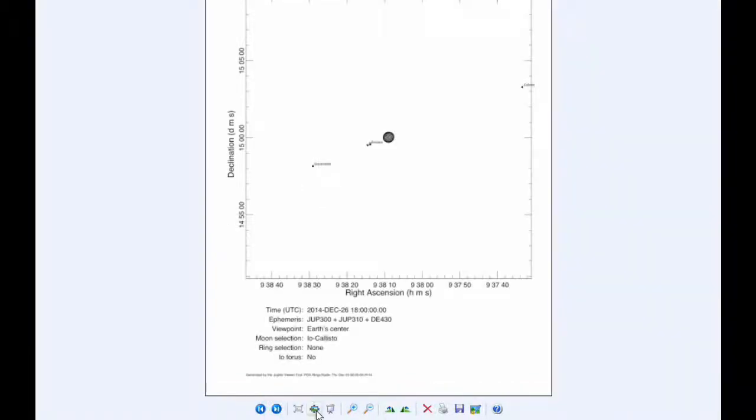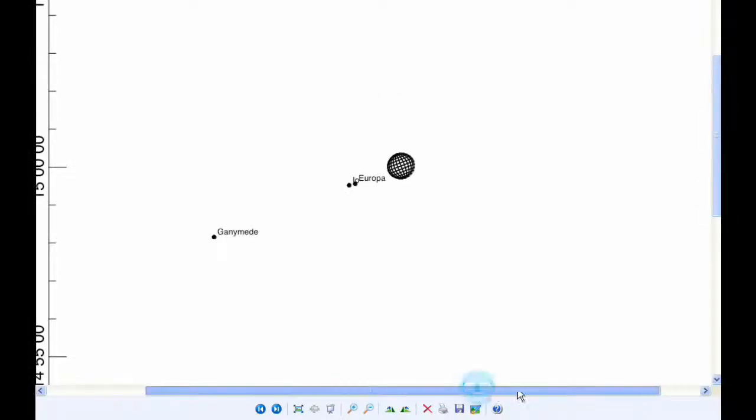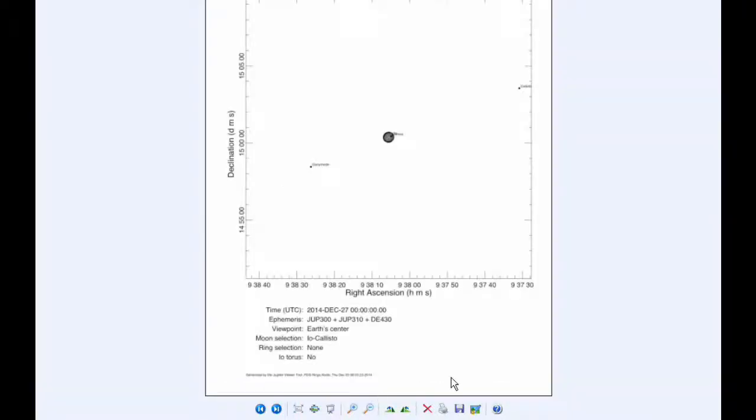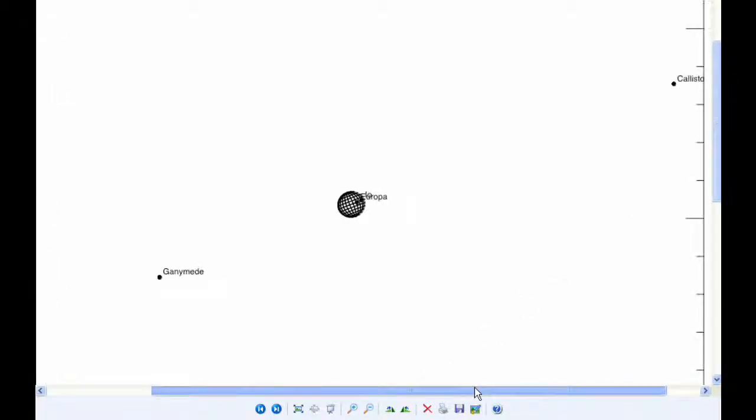At 18 hours UTC, Io is in quadrant two still heading west, as is Europa. And at zero hours UTC, you can see that Io and Europa are both transiting Jupiter at this time.